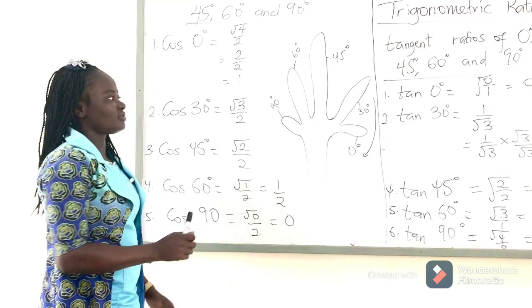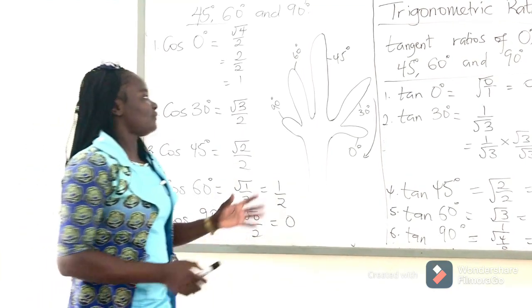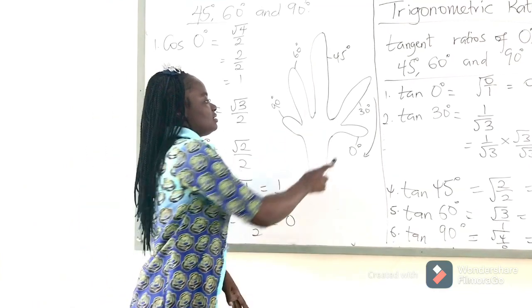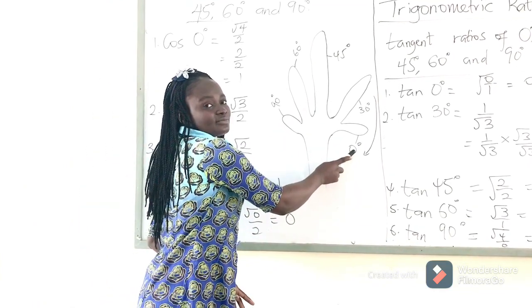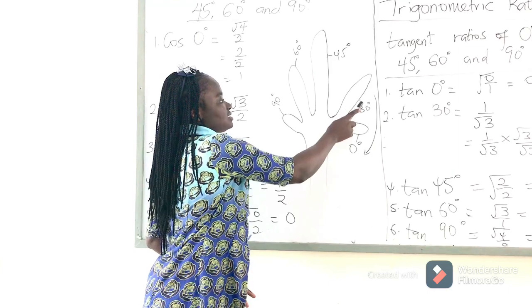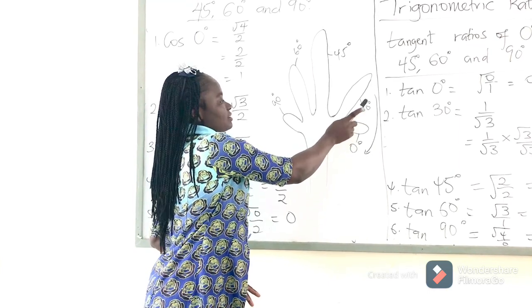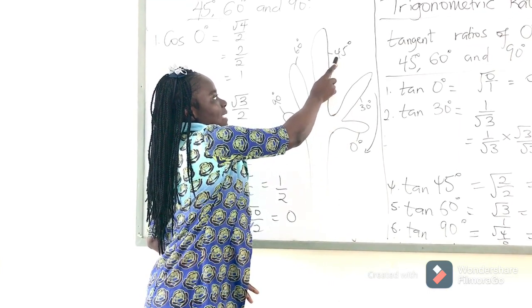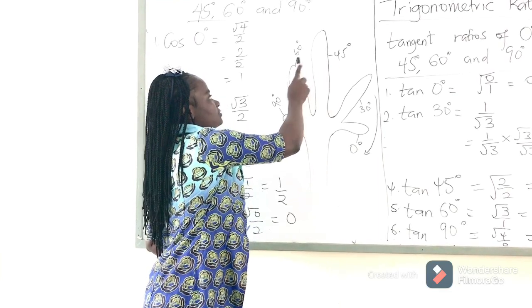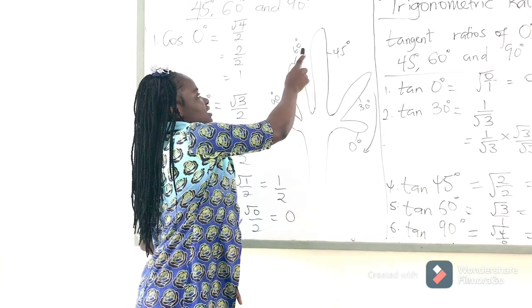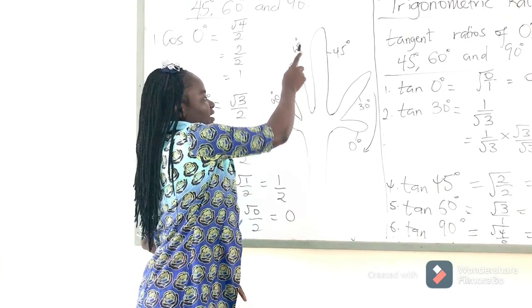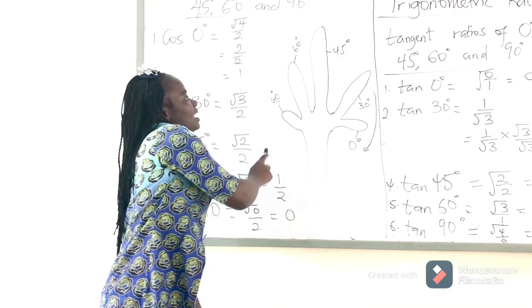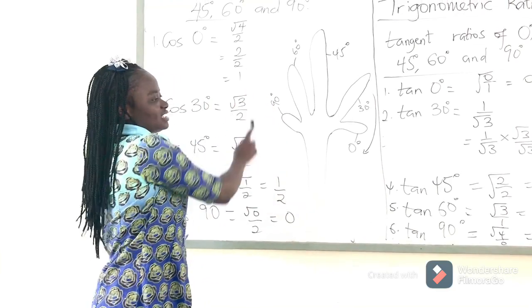As we see here on the board: cosine 0 degrees corresponds to the little finger, cosine 30 degrees to the ring finger, cosine 45 degrees to the middle finger, cosine 60 degrees to the index finger, and cosine 90 degrees to the thumb, as illustrated.